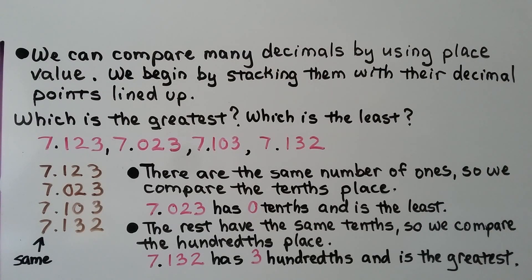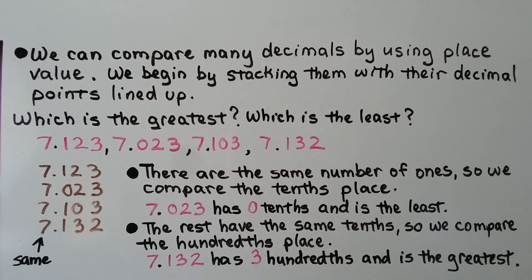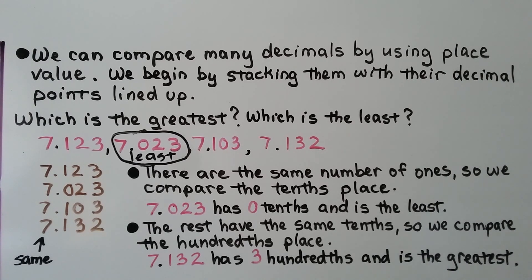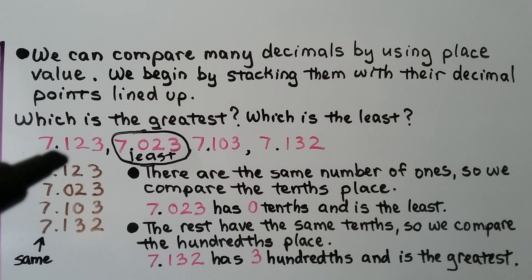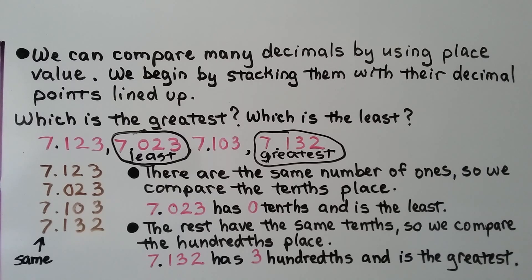We can compare many decimals by using place value. We begin by stacking them with their decimal points lined up to find which is the greatest and which is the least. They all have a 7 in the ones place, so we compare the tenths place. One has a 0 in the tenths place, so it's the least. The rest have a 1 in the tenths place, so we compare the hundredths. Two have a 2 and one has a 3 in the hundredths place. Since 7 and 132 thousandths has a 3 in the hundredths place, that one is the greatest.